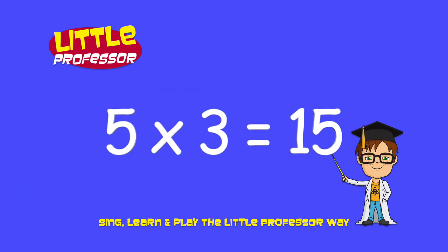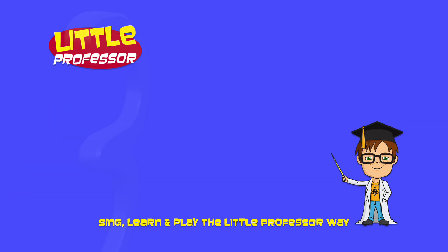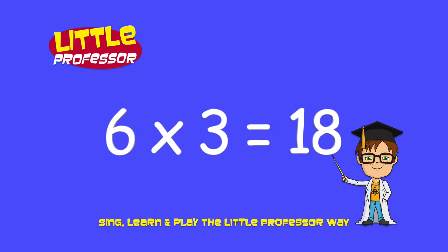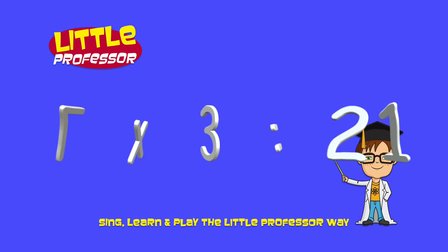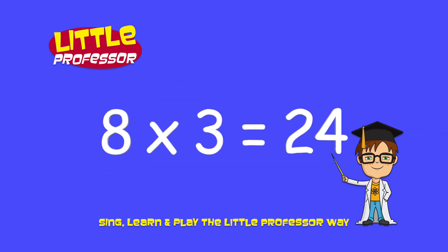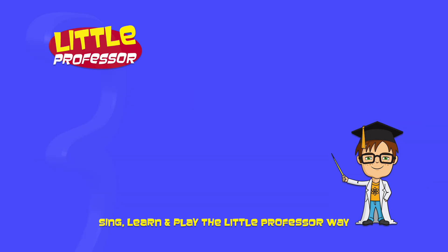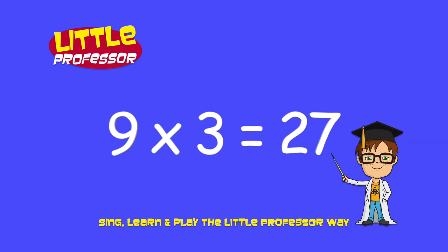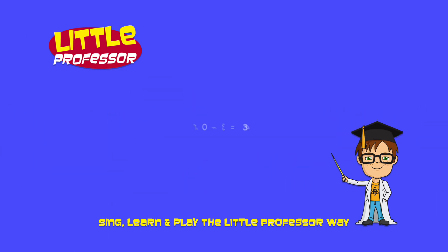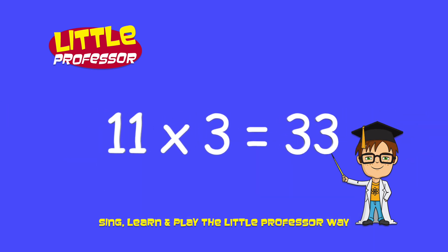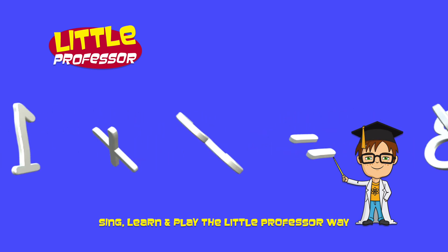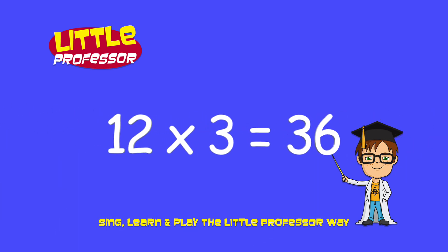5 × 3 = 15, 6 × 3 = 18, 7 × 3 = 21, 8 × 3 = 24, 9 × 3 = 27, 10 × 3 = 30, 11 × 3 = 33, 12 × 3 = 36.